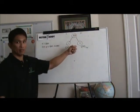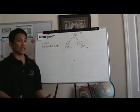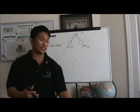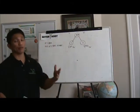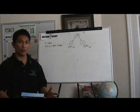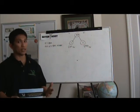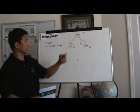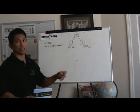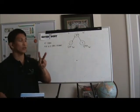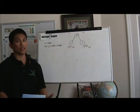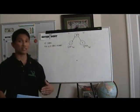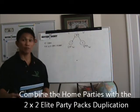The key is duplication. This is where the beauty of this business and our comp plan comes in. When I talk to somebody, for example my friend John, I tell John, 'I'm looking for two people right now. You'll be the first one, but I need you to get the Elite Party Pack because we want to conduct some parties.'